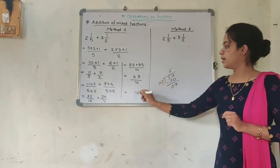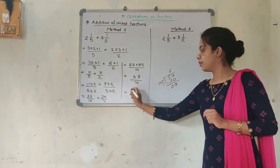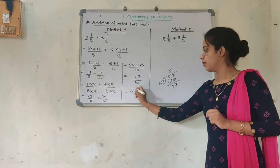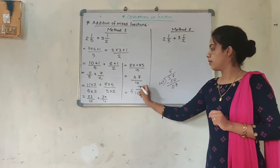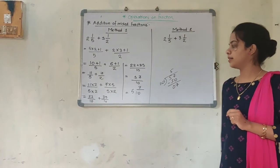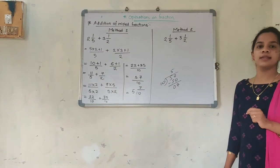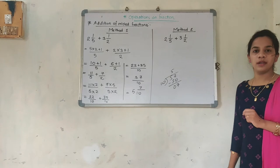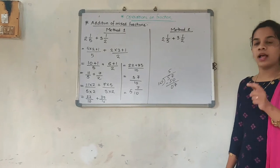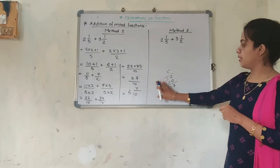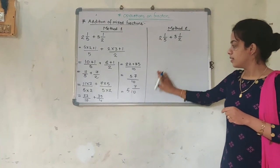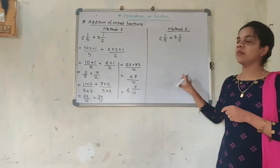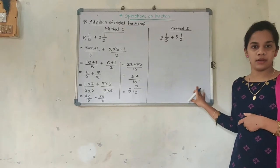So my answer is 5 and 7/10. Now, similarly, we are going to solve this same question by the second method. First method: what we did — 5 into 2 plus 1 upon 5, plus 2 into 3 plus 1 upon 2 — we continued it further and got 11/5 plus 7/2.